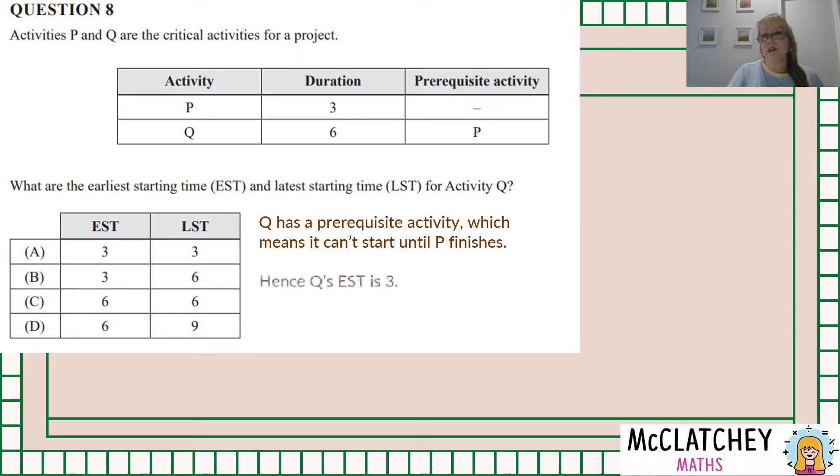Now because they are the only activities we're told about in the particular process then it's on the critical path, it has to go boom boom boom one after the other. So the next one is going to take place which is Q straight after that so the latest it can start is also three. There's no fill time in the middle between the two activities they've got to continue one after the other in order for the project to be finished in the shortest possible time. And that's the whole point of what a critical path is. So that means our only possible option is A.